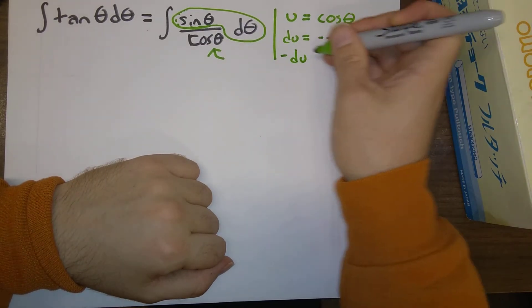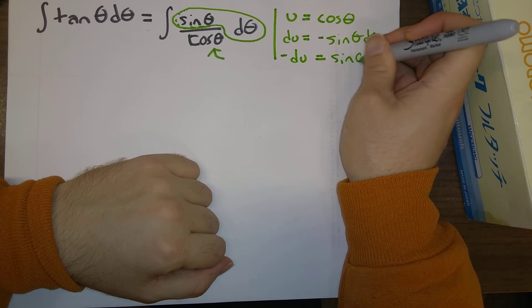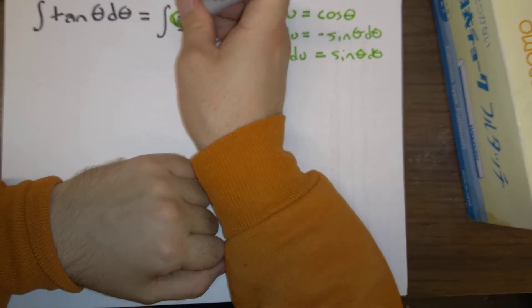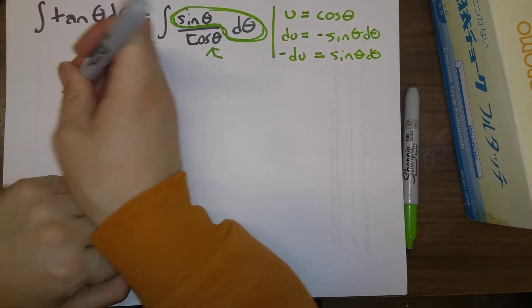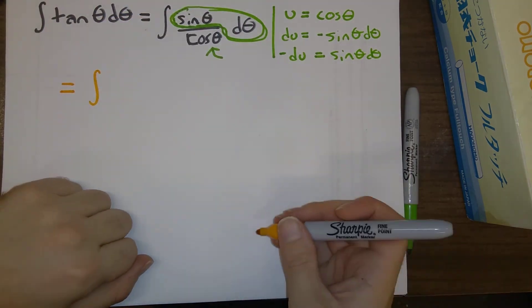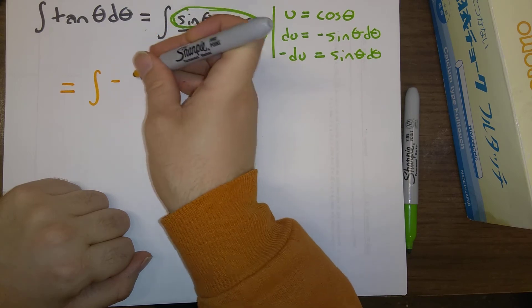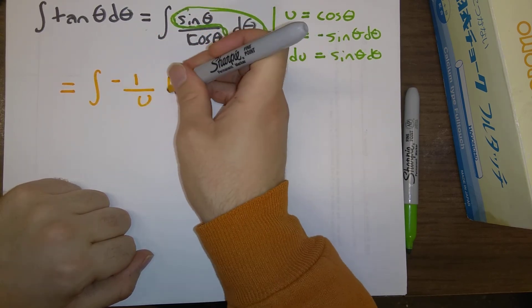Hey, minus du is equal to sine theta d theta, which is exactly what I circled there in green. So what does this yield? So we end up with minus 1 over u du.